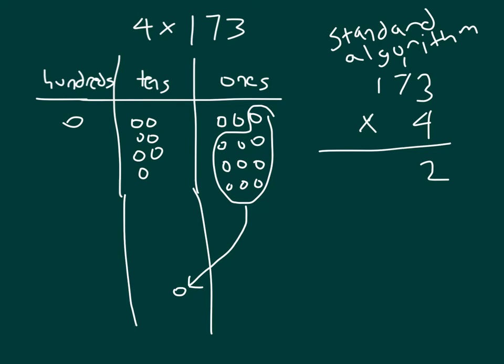For the standard algorithm, as we continue, we go 4 times the 7, which is 28. So I actually need more disks within here of the tens. 4, 5, 6, 7. So I have 4 groups of 7 there. That's 4 times 7 is 28, and I add in that 1, which is 29. So I will be left with 9, and I will regroup at 2.